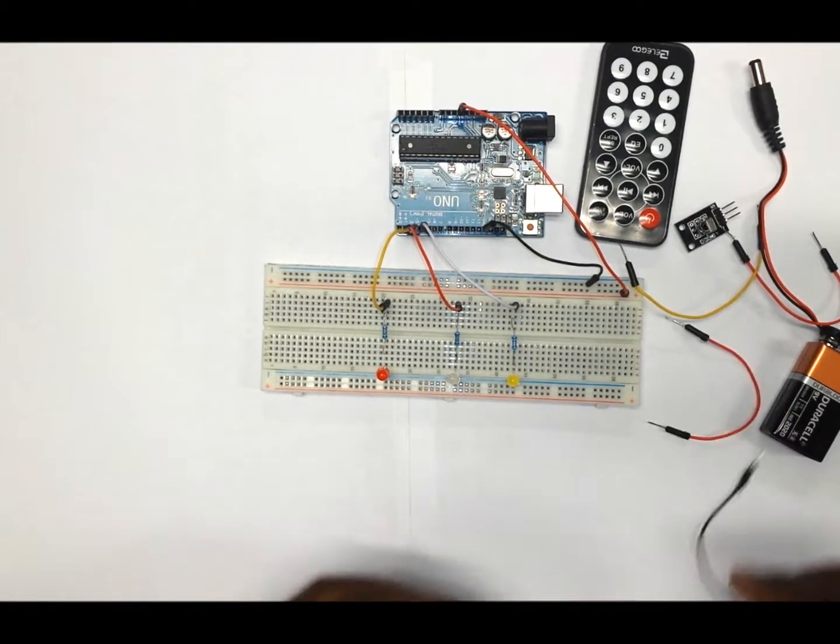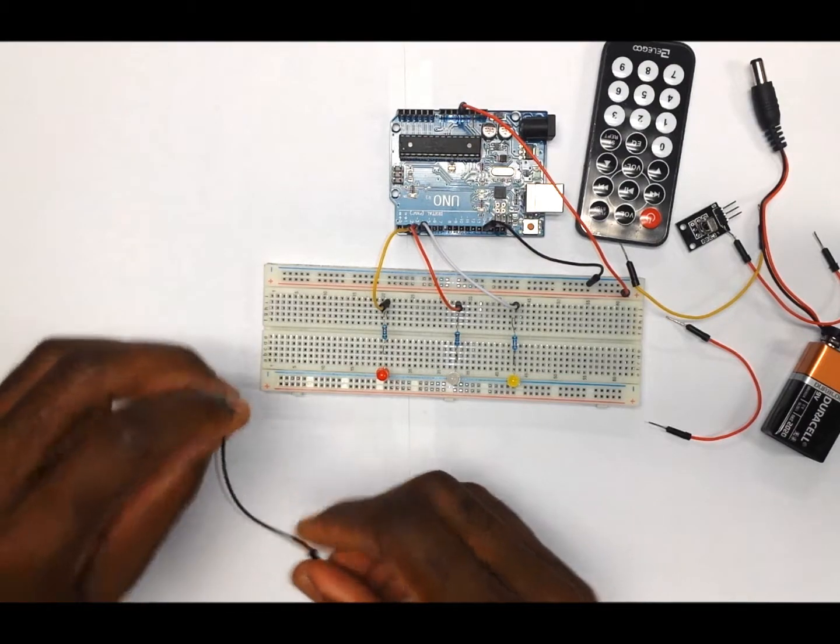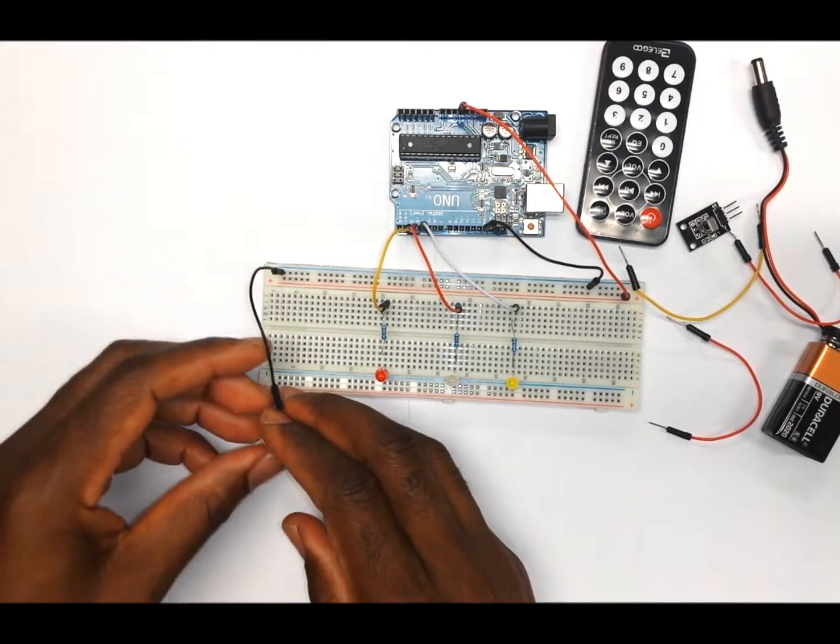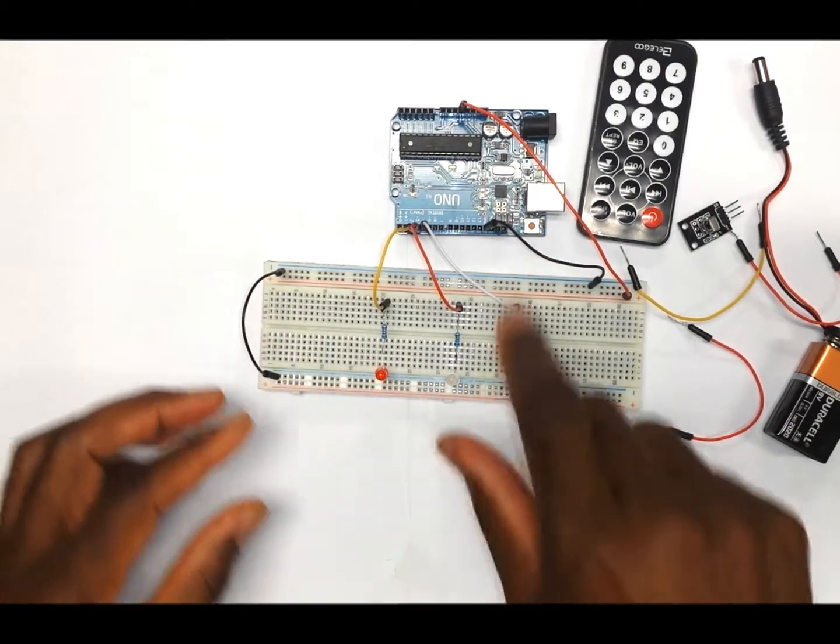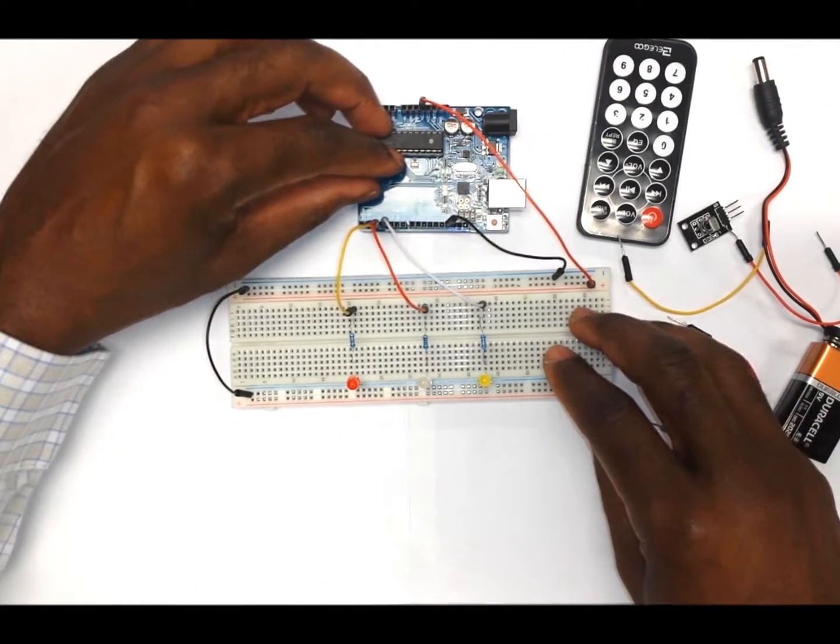And now we need another wire that is going to come from the negative rail of the breadboard across to the other side of the negative rail so that we have a complete circuit for the LEDs. This completes the wiring of the LEDs.